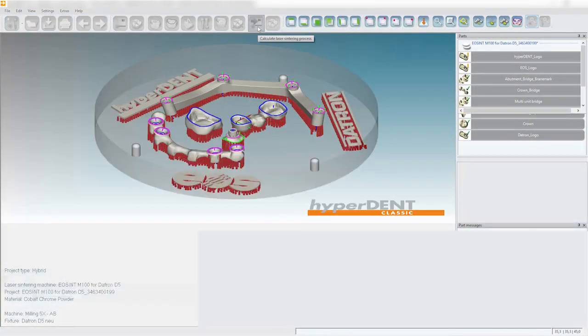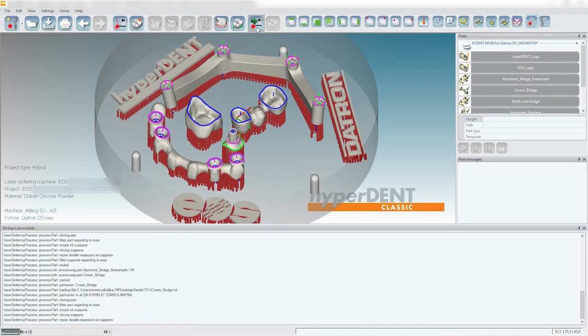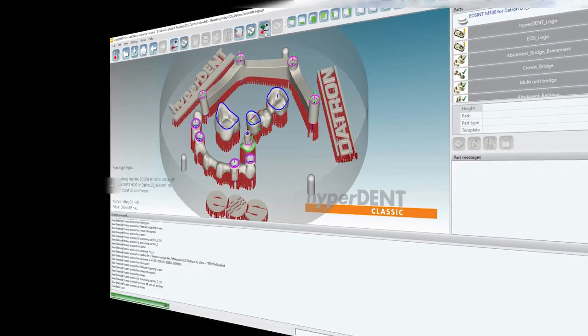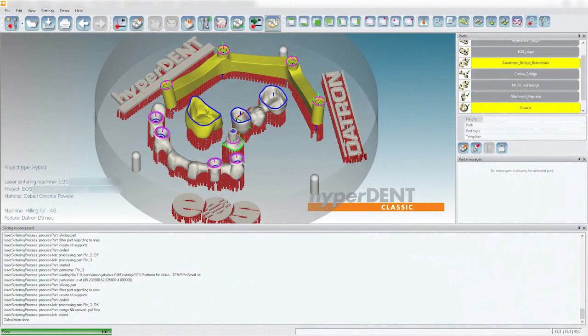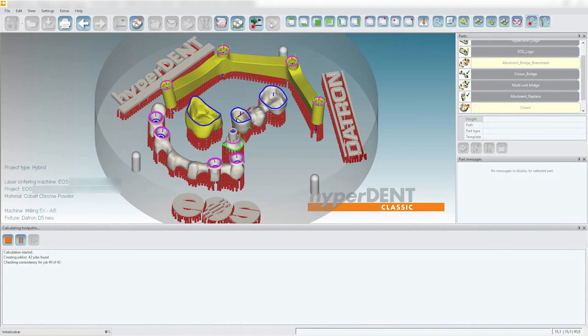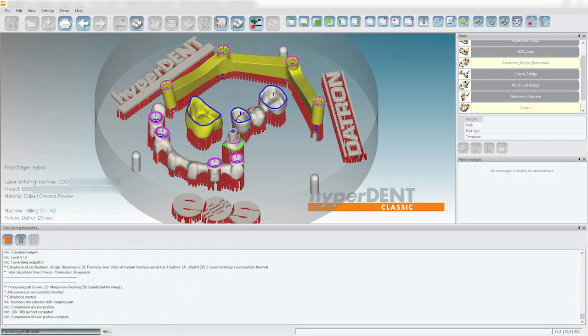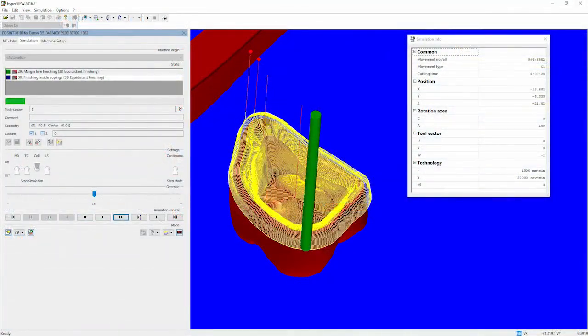Once all has been set, simply create the slice file for your EOS machine. Now generate the NC code for your Dotron machine. The part offset for post-milling will be generated automatically. If you want, you can simulate the toolpath as well.